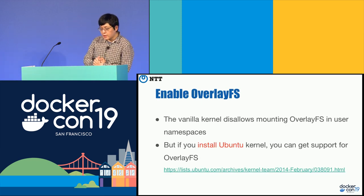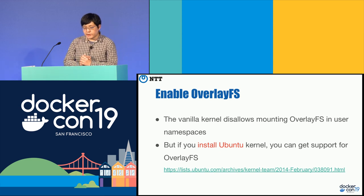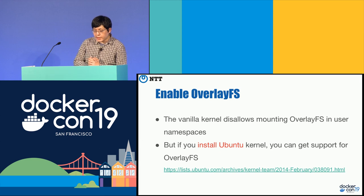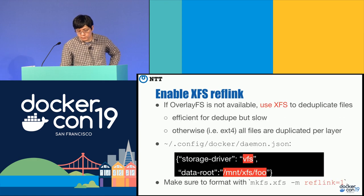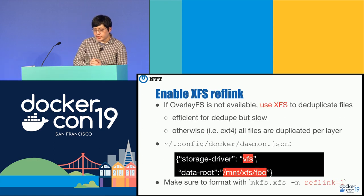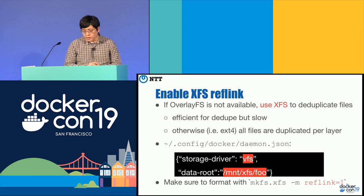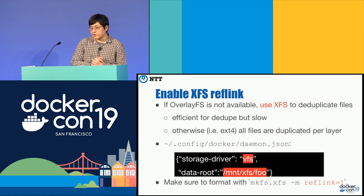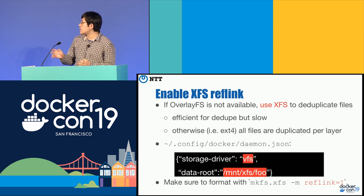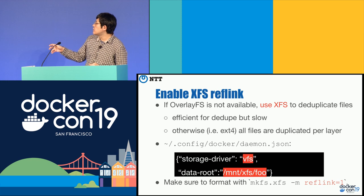For filesystem, as I mentioned, the vanilla kernel doesn't support overlay FS, so I suggest using the Ubuntu kernel to get overlay filesystem support. If you're not using Ubuntu, you should use XFS to deduplicate files. To use XFS, you need to modify the Docker daemon JSON configuration and also format the XFS filesystem with mkfs.xfs -m reflink=1.